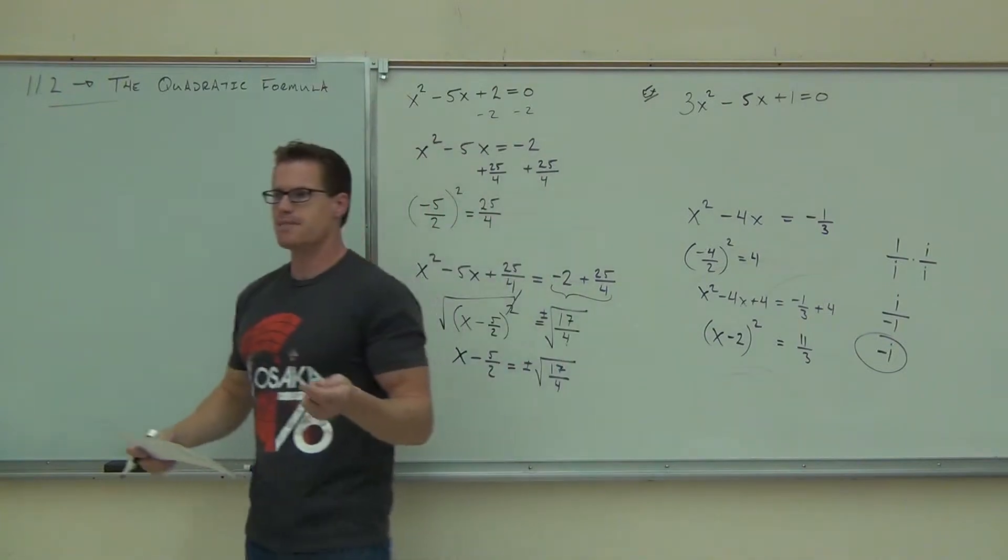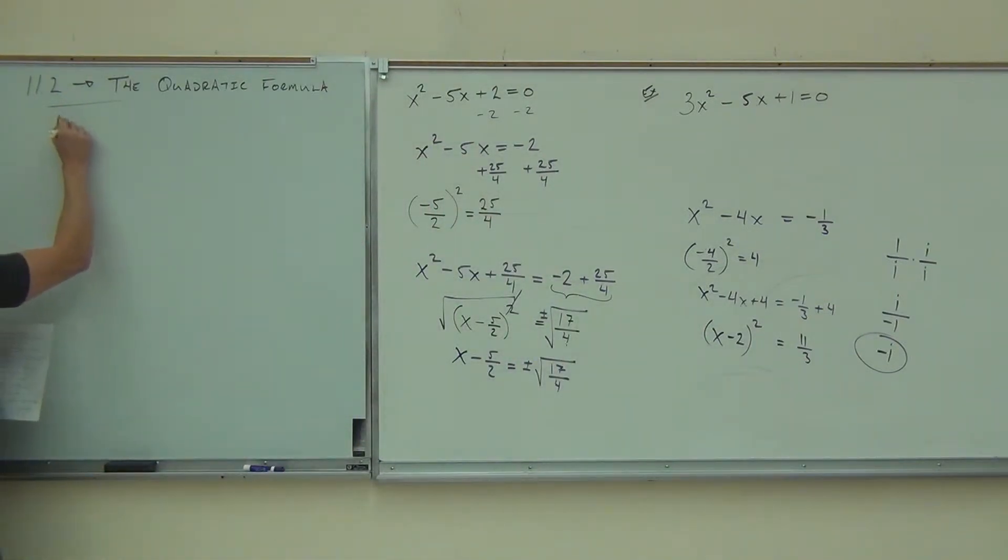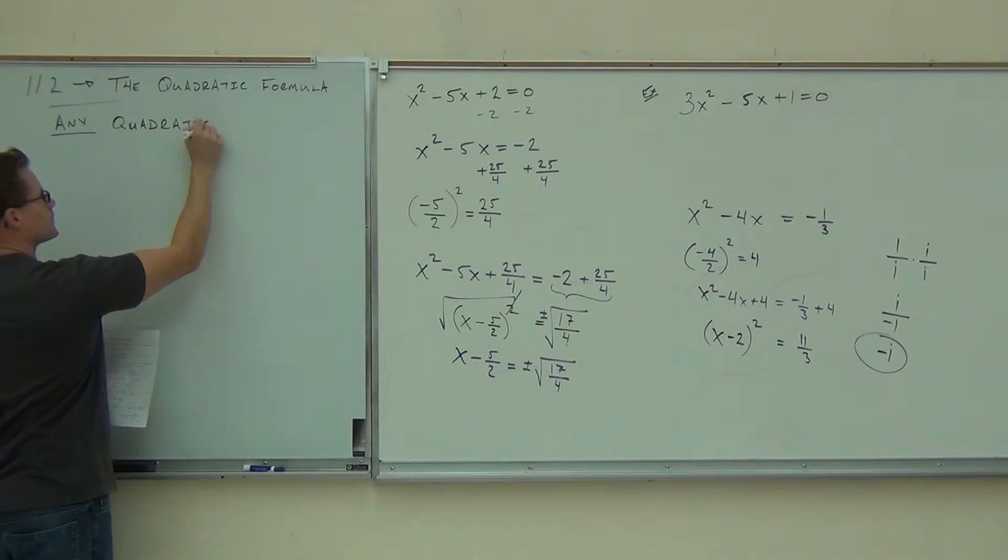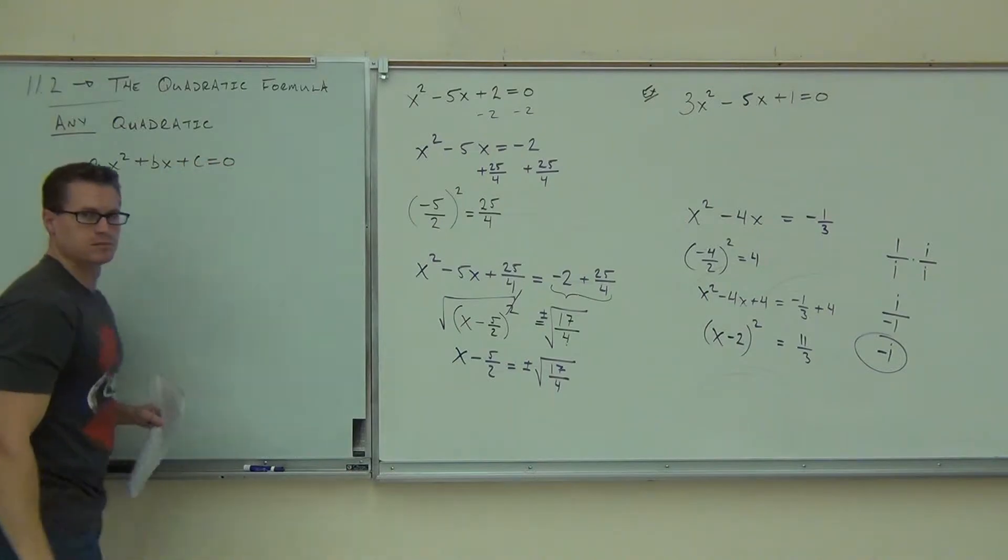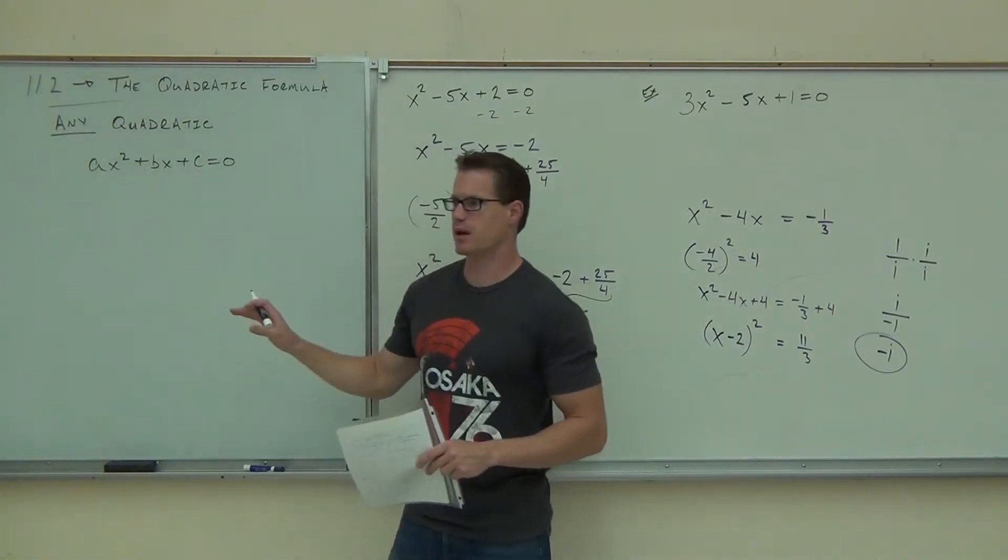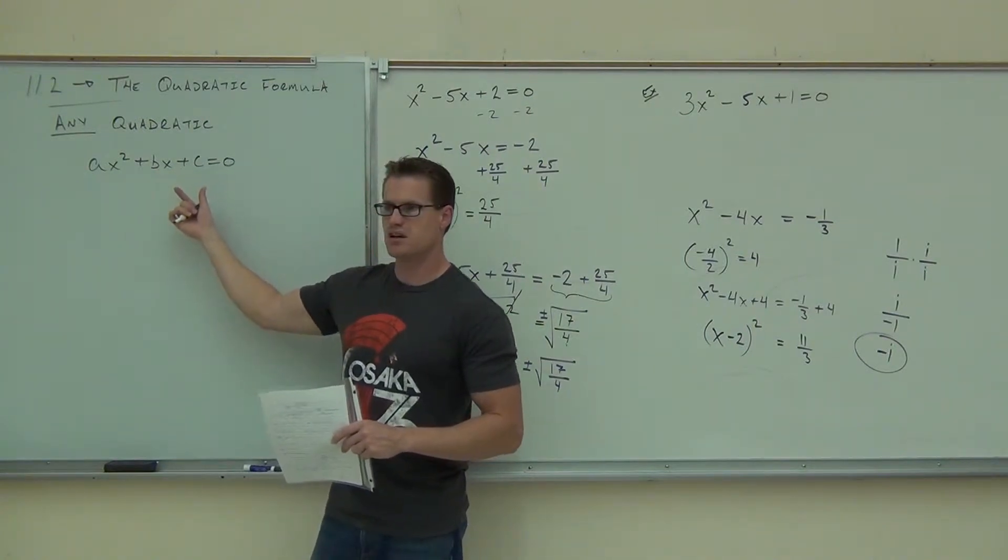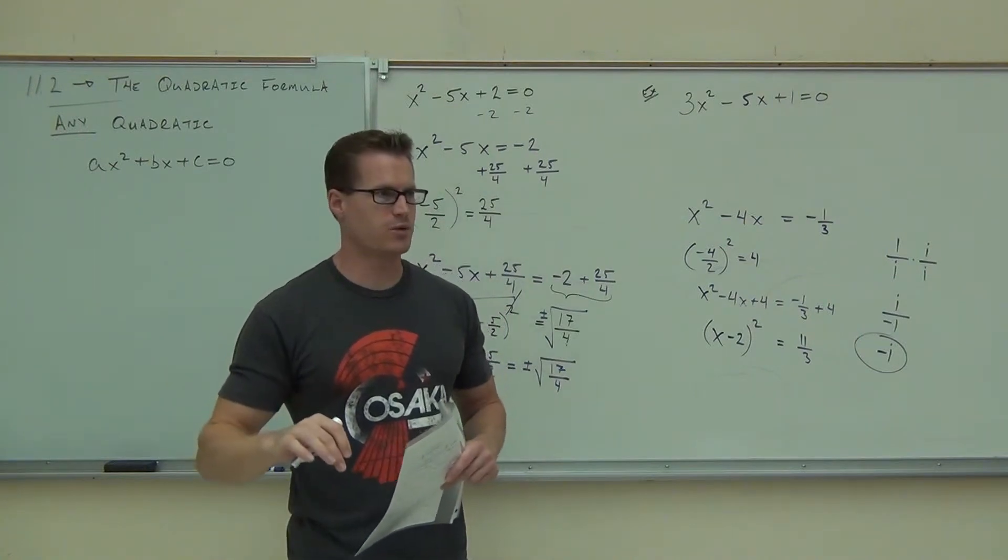Do you agree that any quadratic equation can be written as ax squared plus bx plus c equals zero? This has an x squared term, an x term, and a constant. Everything can be written off to one side and zero on the other side.